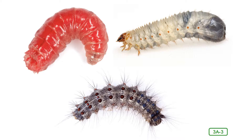They also molt, or shed their hard exoskeletons many times as they grow, because the exoskeletons don't grow with them. Based on this sentence, what does the word molt mean? That's right — it means to shed or get rid of. In this way, insect larvae grow larger each time they molt, until they are ready to change into adult insects.